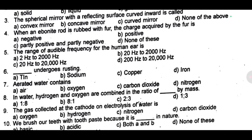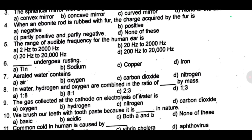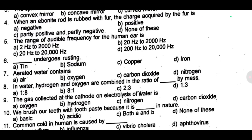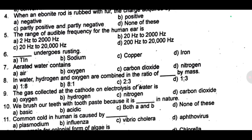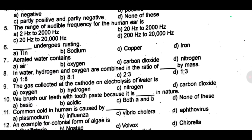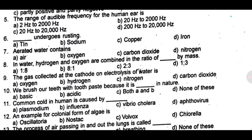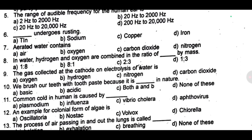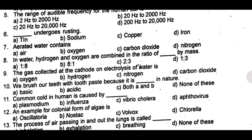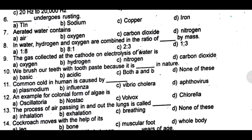Seventh one: aerated water contains dash. Eighth one: in water, hydrogen and oxygen are combined in the ratio of dash by mass. Ninth one: the gas collected at the cathode on electrolysis of water is dash. Tenth one: we brush our teeth with toothpaste because it is dash in nature. Eleventh one: common cold in humans is caused by dash. Twelfth one: an example for colonial form of algae is dash.